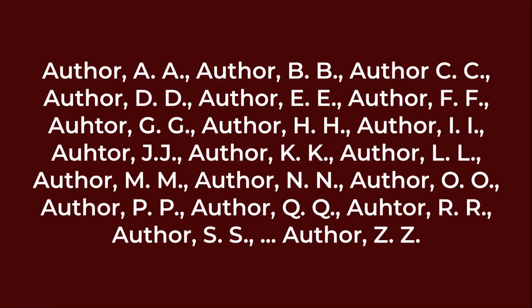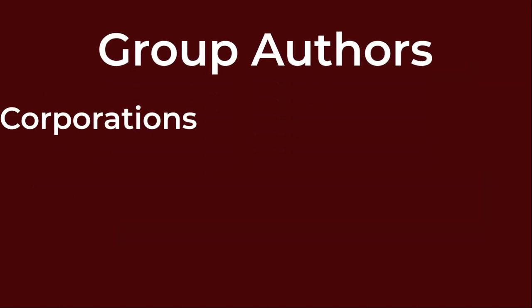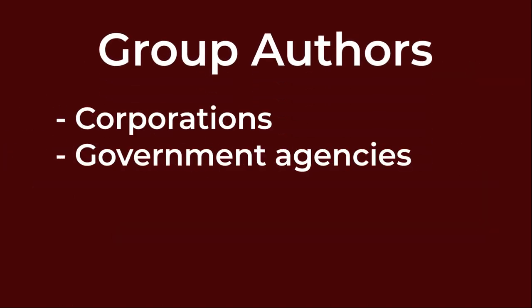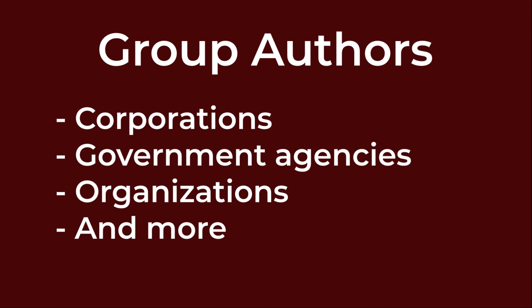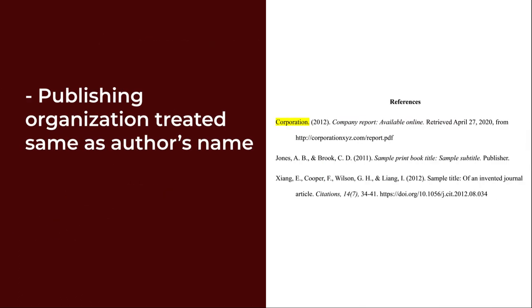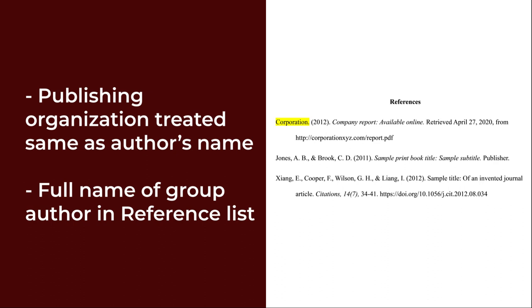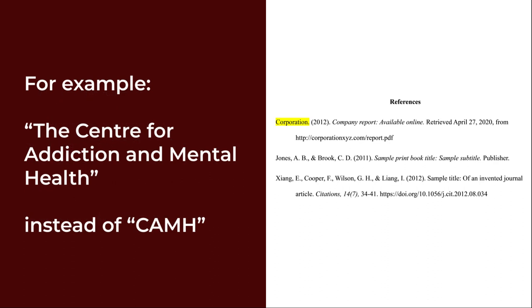When there are 21 or more authors, include the first 19 names, insert an ellipsis but no ampersand, and then add the final author's name. Group authors can include corporations, government agencies, organizations, etc. You can treat the publishing organization the same way you treat the author's name and format the rest of the citation as normal. Be sure to give the full name of the group author in your reference list, although abbreviations may be used in your text — for example, use the Center for Addiction and Mental Health instead of CAMH.